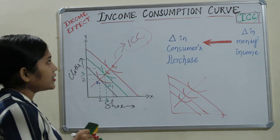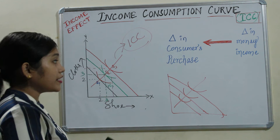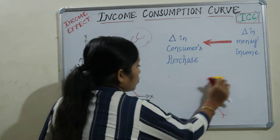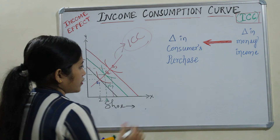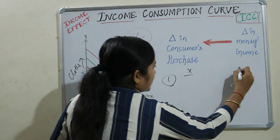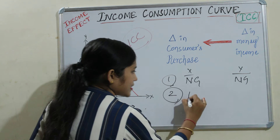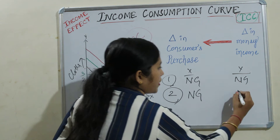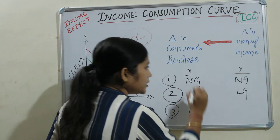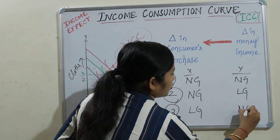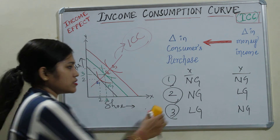The income consumption curve here is a straight line, but it will be a straight line only in three cases. First, when both X-axis and Y-axis goods are normal goods. Second, when X-axis has a normal good and Y-axis has a luxury good. Third, when X-axis has a luxury good and Y-axis has a normal good. In these three cases you get a straight line income consumption curve.